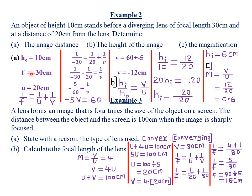Therefore f equals negative 30 centimeters. The key point is that for any diverging or concave lens, f will always be negative; for a convex or converging lens, f will always be positive. The object distance u is 20 centimeters. For part a, we find the image distance v using the lens formula: 1/f = 1/u + 1/v, substituting 1/(−30) = 1/20 + 1/v.